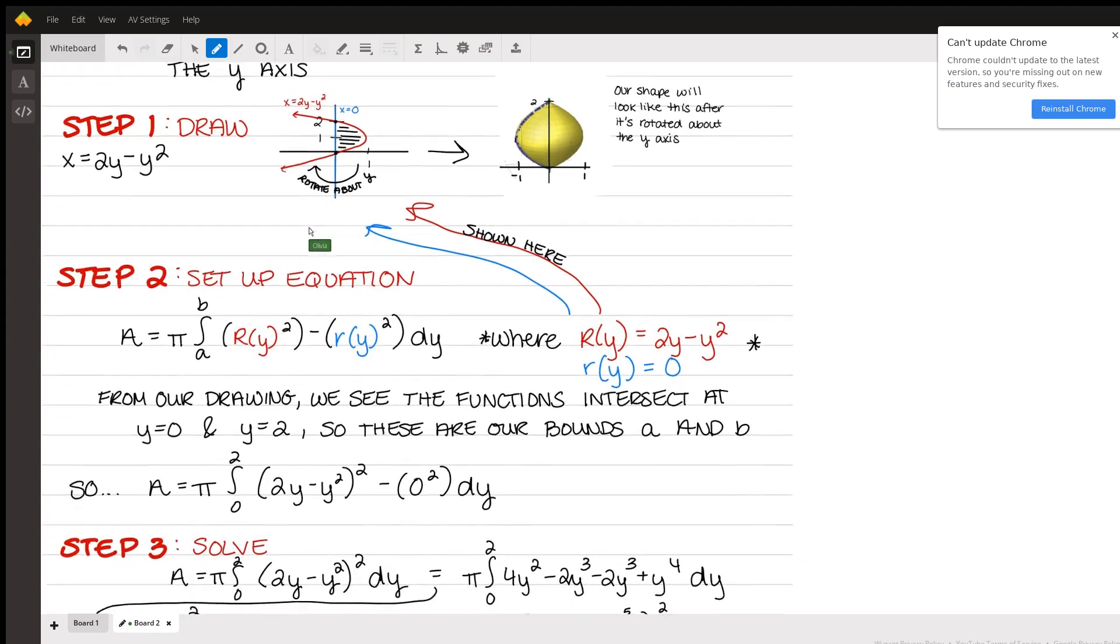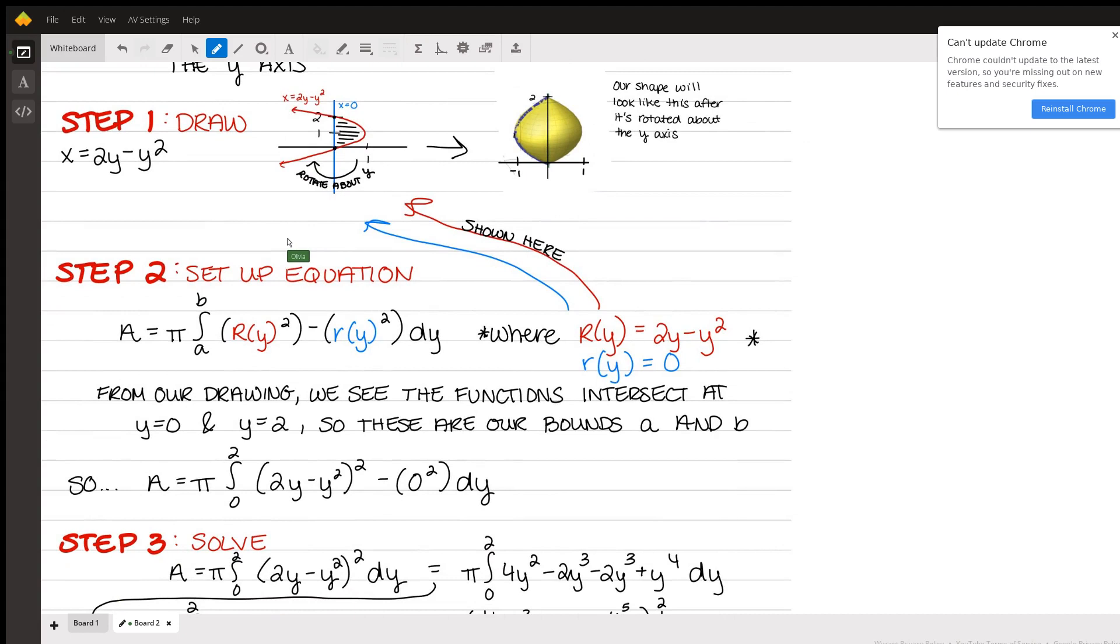Now it's important to understand that when you're finding the area of a rotated solid, you're essentially finding the area of all of the disks of the cross sections of this solid. So if you took this solid up and you cut it up into extremely small and infinite amount of disks, you could find the area of all of those disks. So to kind of add all of those up and find the solid area of this entire solid right here, you have to integrate.